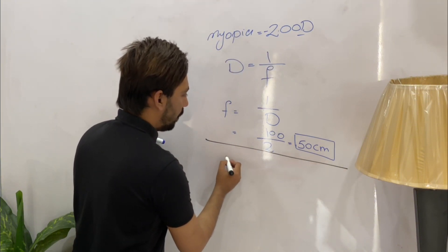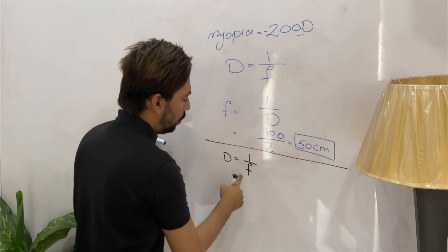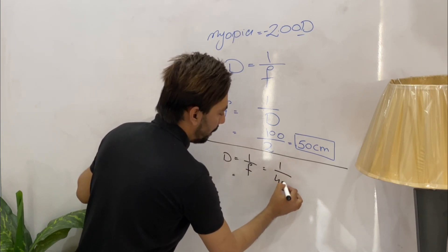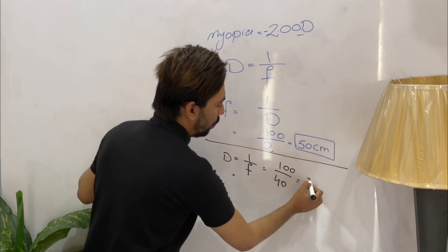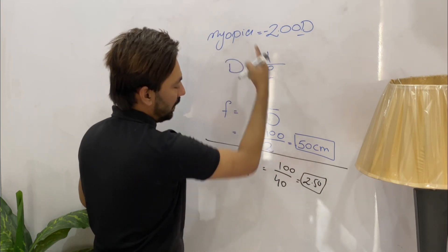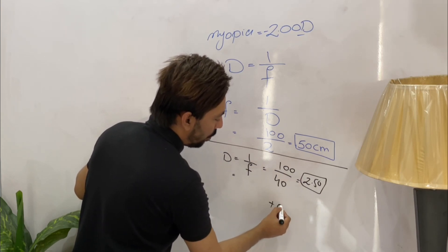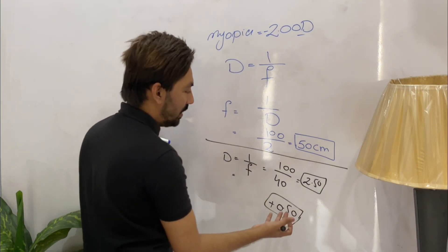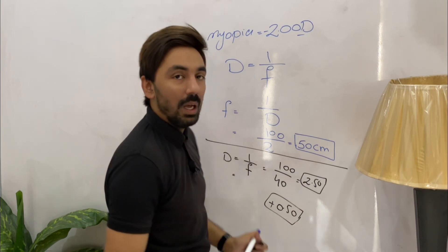Using the same formula D = 1/f, if the patient needs to read at 40 centimeters: D = 100/40 = 2.5 diopters. The patient has a refractive error of minus two diopters, but he needs 2.5 diopters to read at 40 centimeters, meaning he needs an additional 0.50 diopters. That extra 0.50 diopters must come from accommodation.